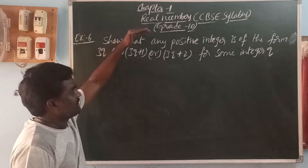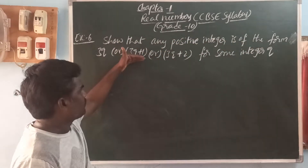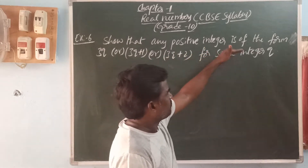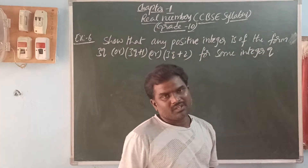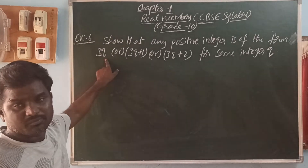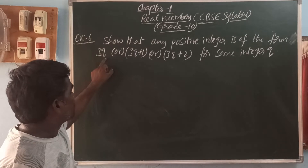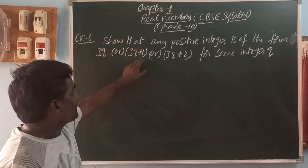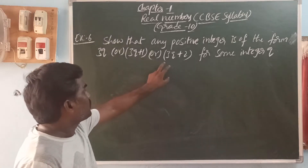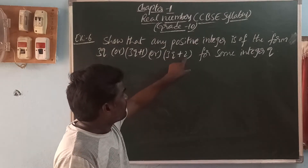Example 6: Show that any positive integer is of the form 3Q, or 3Q plus 1, or 3Q plus 2 for some integer Q. Here, 3Q means multiples of 3. 3Q plus 1 means the number which is divided by 3 and the remainder is 1. 3Q plus 2 means the number which is divided by 3 and the remainder is 2.